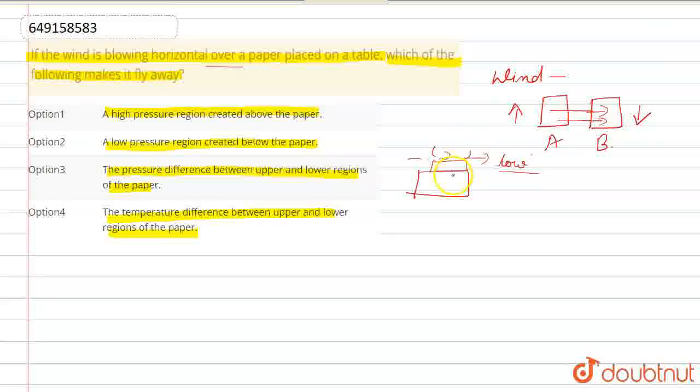So a pressure difference is created, and this is why the paper flies. The pressure on the upper region of the paper is decreased, and the lower region pressure remains the same. So option 3 is correct - the pressure difference between the upper and lower regions of the paper.